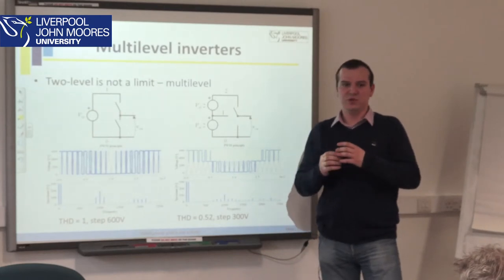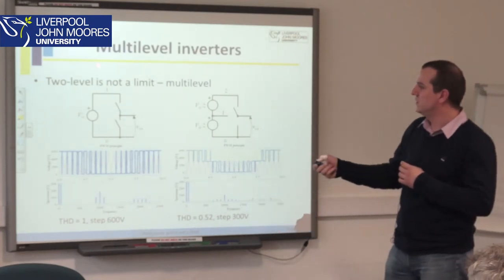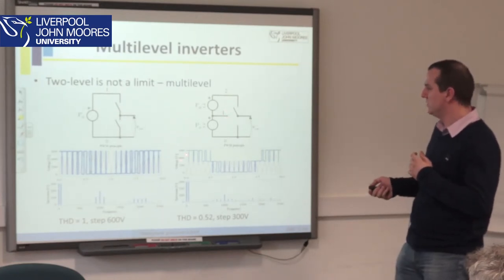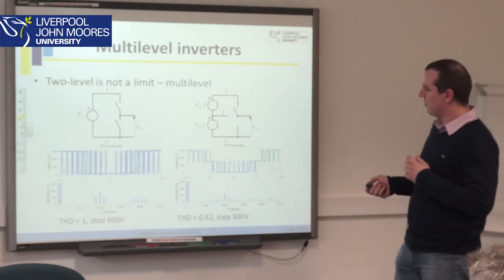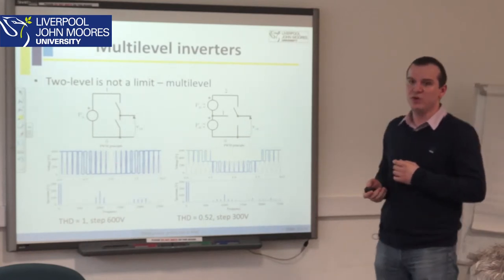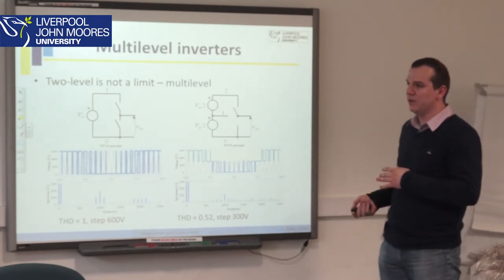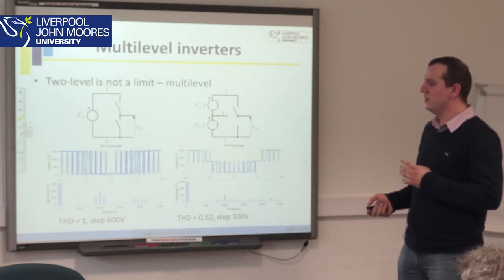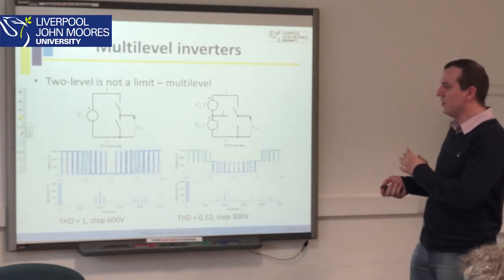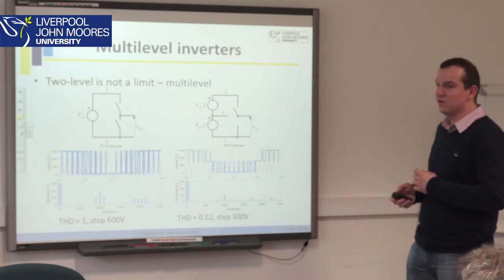Why not also increase the number of levels in the inverter? Instead of switching between just two levels, we can find the midpoint and switch between three levels. The produced voltage looks much more like a sinusoidal wave than that obtained with a two-level inverter. Looking at the spectrum, the higher harmonics are much lower, and the total harmonic distortion — which represents the power wasted through harmonics relative to the fundamental — can be reduced by a factor of two.